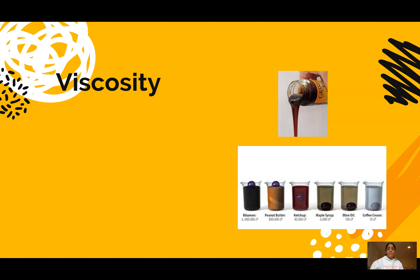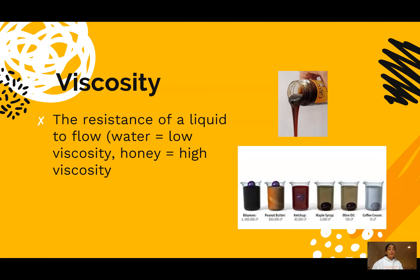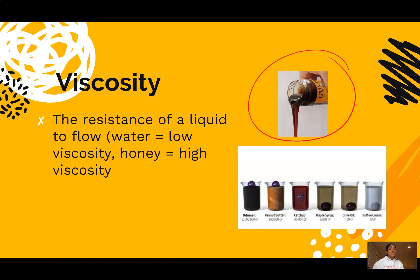Another property of liquids is viscosity — the resistance of a liquid to flow. It's easy to understand if you think about examples: water has a pretty low viscosity and flows easily when poured. On the other hand, something like honey or molasses is very viscous — it has a high viscosity and resists flowing.